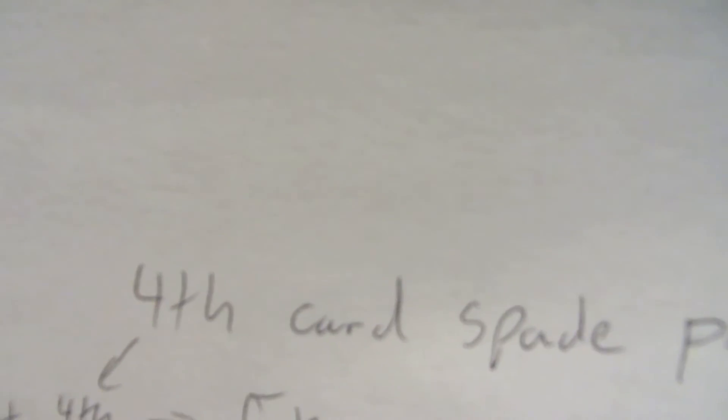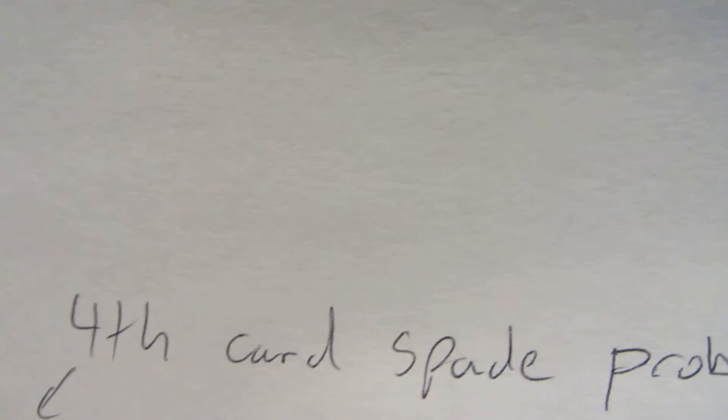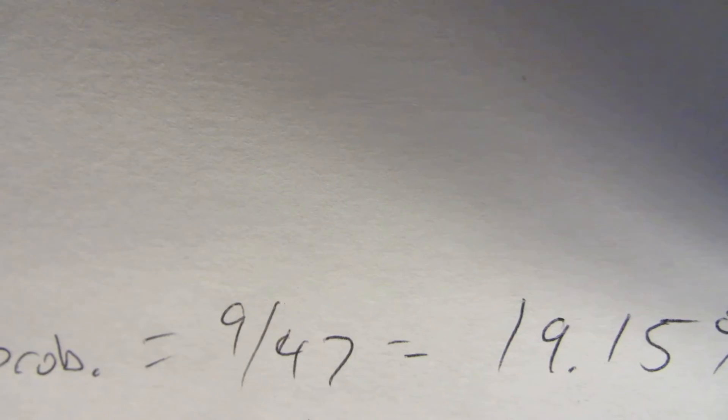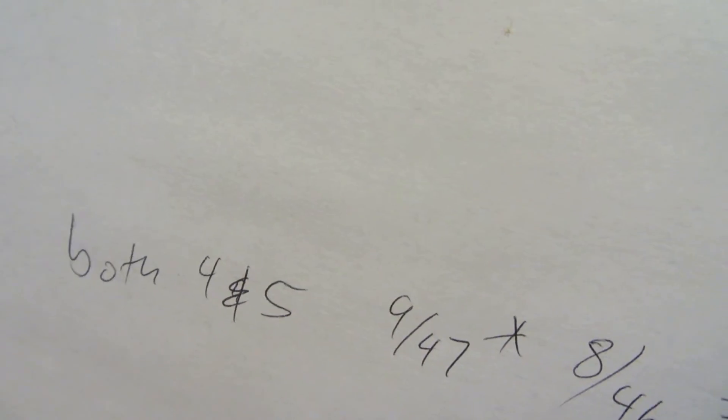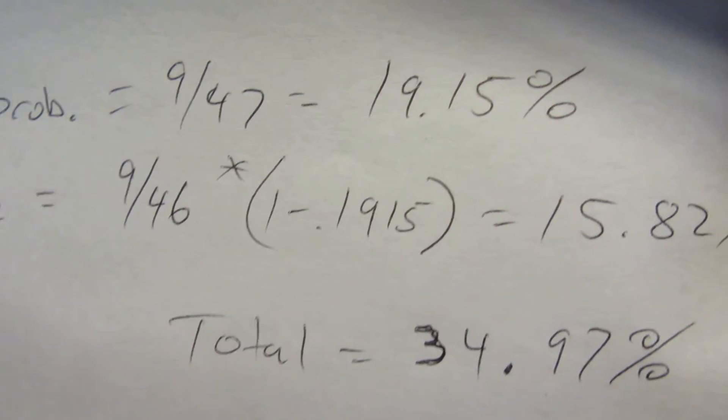But that 3.33% is actually part of this 19.15%. So we did probability of the 4th card hitting Spade. That is 19.15% of the time. And that includes all the times that you also hit on the 5th. So we don't have to add that into our total.